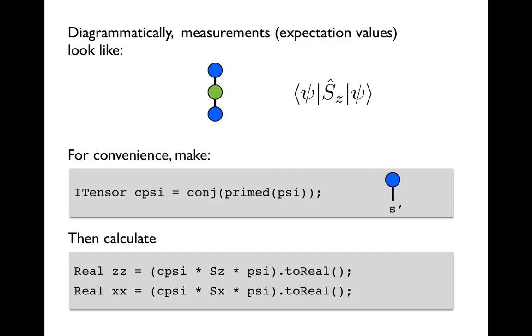Now an interesting thing to do would be to measure the Sz expectation value of our new wave function that's tilted at an angle. And diagrammatically that looks like simply surrounding the Sz operator with the ket and bra version of psi. And you see that it has no external lines so it's equal to a scalar.